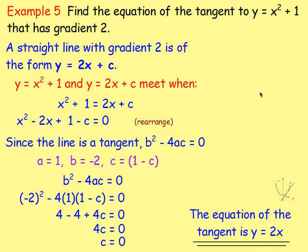Find the equation of the tangent to y equals x² + 1 that has a gradient of 2. A tangent is a straight line, y equals mx + c. Since the gradient is 2, the tangent is y equals 2x + c. Sub into the curve equation: x² + 1 equals 2x + c; rearrange to a quadratic. Since it's a tangent, set the discriminant equal to zero, sub in a, b, and c, and solve — c equals zero. So the equation of the tangent is y equals 2x.